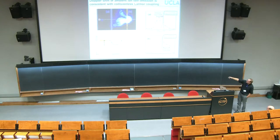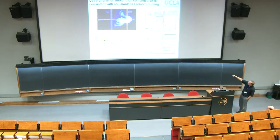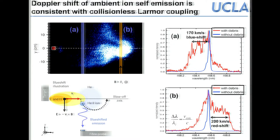Spectroscopy of the self-emission was performed using a fiber integrating along a line of sight. Near the target at early times, the helium-plus line is broadened and shifted to the blue — corresponding to about 200 km/s — meaning the ambient plasma is actually moving downward at that location, consistent with the Lorentz field.